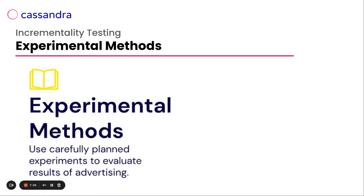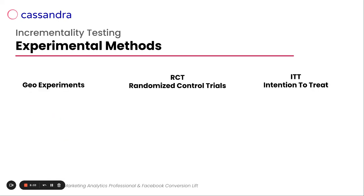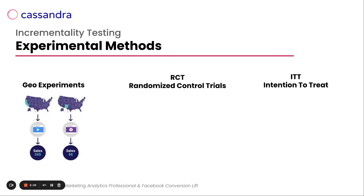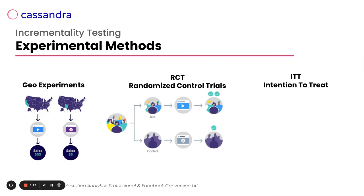With experimental methods, we can split our audience into different groups. In a geo experiment, we decide which geographies — which regions or zip codes — will see our campaign or promotion. With randomized controlled trials (RCTs), we randomly assign a treatment group who will see our ads and a control group who will not.